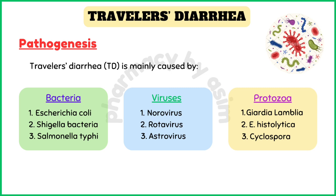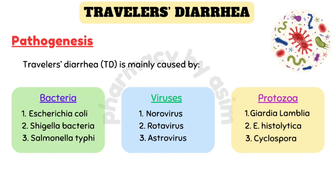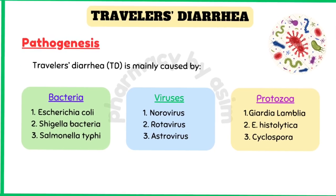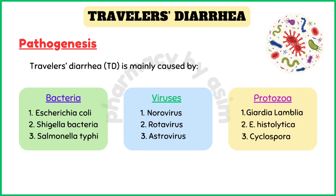The most common pathogen identified is Enterotoxigenic Escherichia coli, followed by Campylobacter jejuni, Shigella species, and Salmonella species. Viral diarrhea can be caused by a number of pathogens including norovirus, rotavirus, and enterovirus.